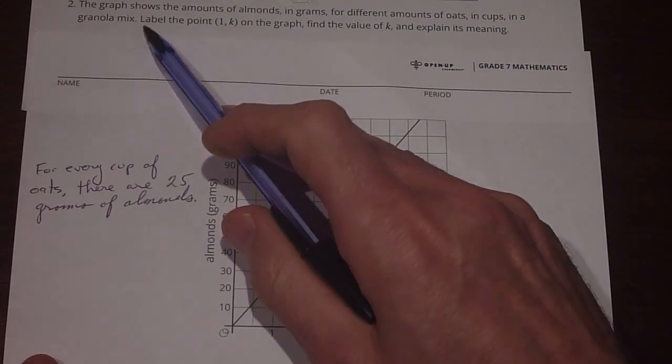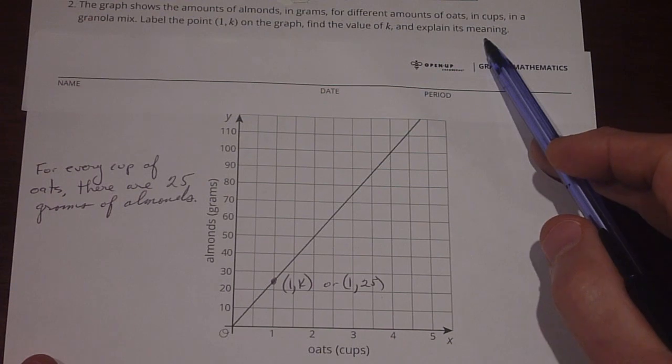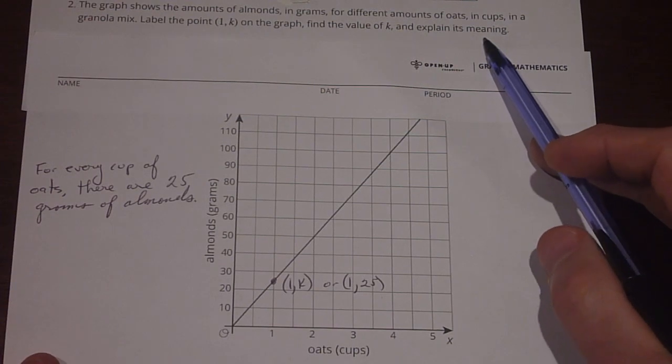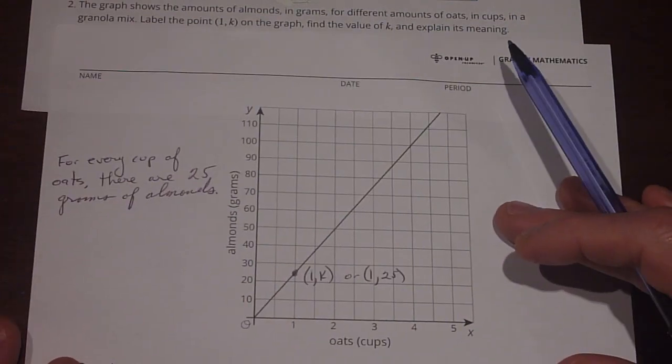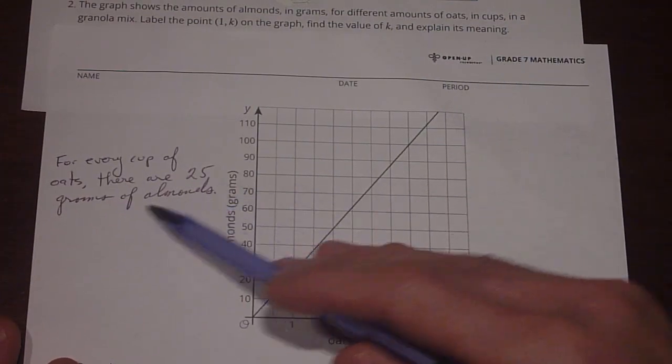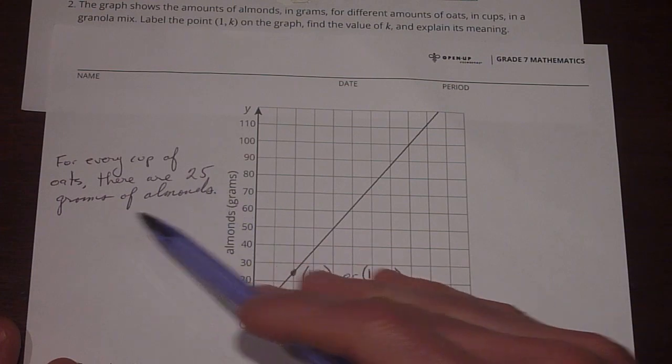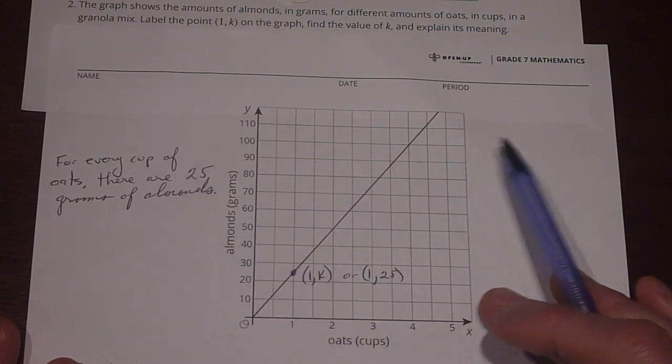So then up here, it says, label the point and explain its meaning. Again, this is about interpreting graphs. So I'm trying to figure out what do these graphs mean. The words of our answers today are almost more important than the numbers. For every cup of oats, there are 25 grams of almonds. So that's what we know from this.